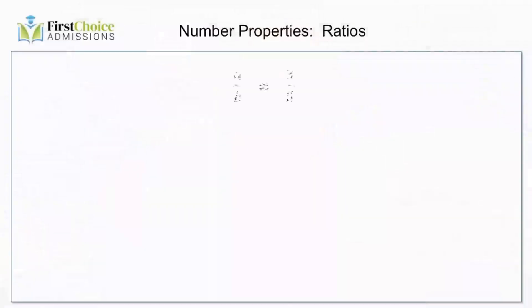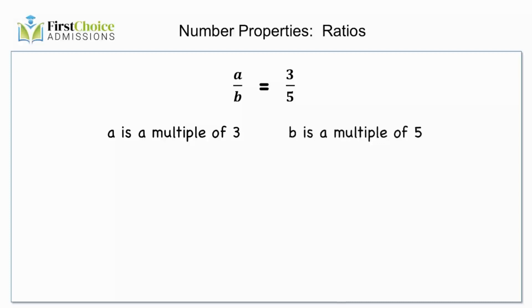There is a simple fact about ratios that is going to make your life so much easier. If a over b equals 3 over 5, then we know for sure that a must be a multiple of 3 and b must be a multiple of 5. We can see that pretty clearly if we cross multiply — this only works if a is a multiple of 3 and b is a multiple of 5.